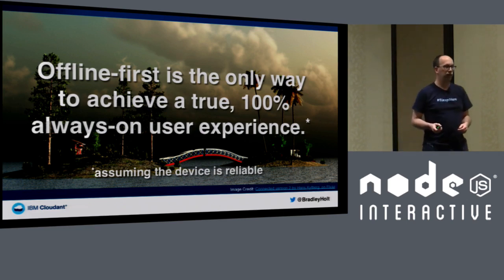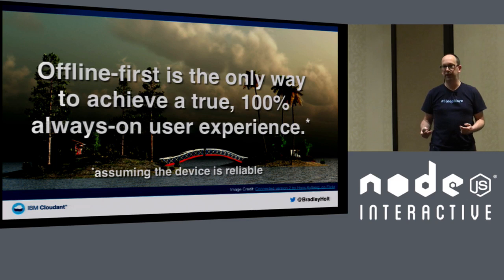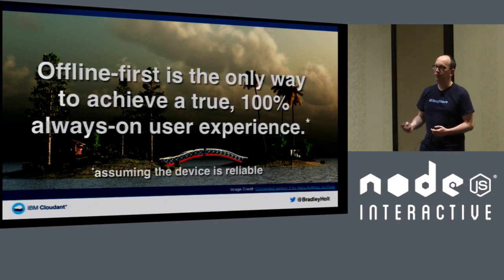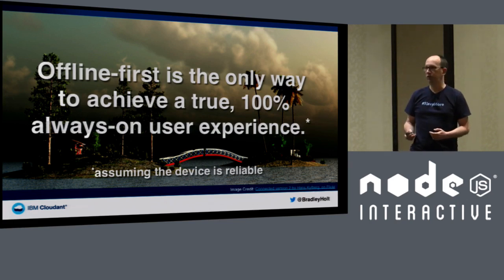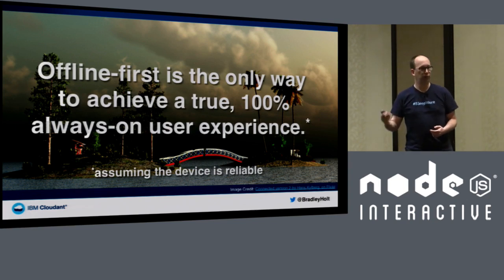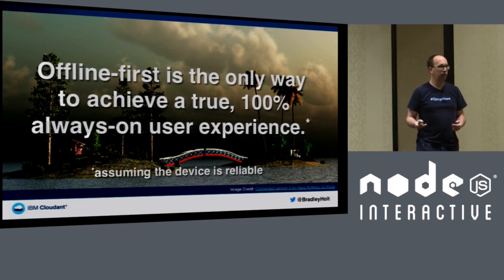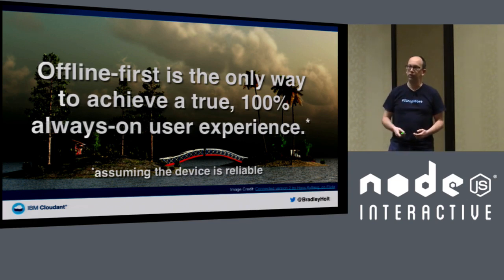Your users want an app that works all the time. Ubiquitous connectivity has made it so that users want that device in their pocket working all the time. But networks can never be 100% reliable. With an offline-first approach, you can provide that experience of the app always working — by storing data locally on a device and then synchronizing to a cloud database or otherwise.